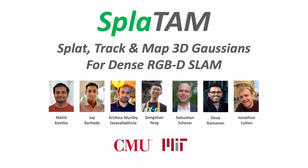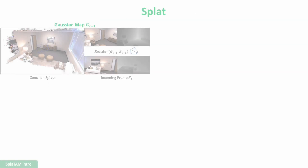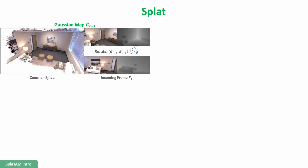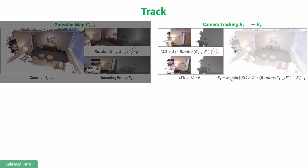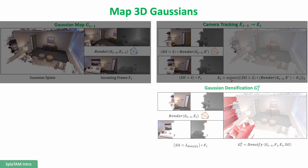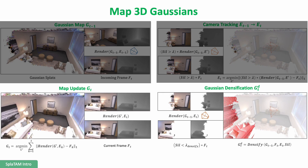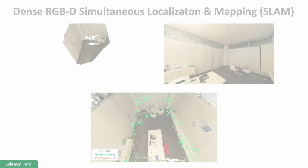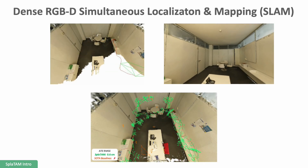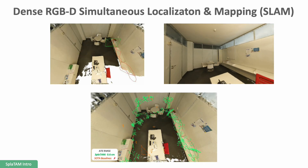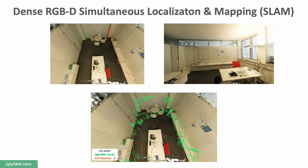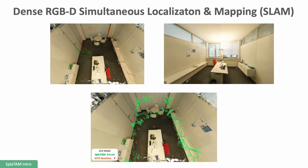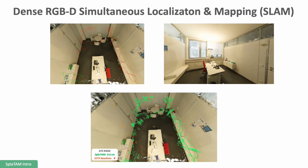We present SPLATAM, an approach to Splat, Track, and Map 3D Gaussian Spheres for Dense RGBD SLAM, with precise camera tracking and high-fidelity reconstruction in challenging real-world scenarios.